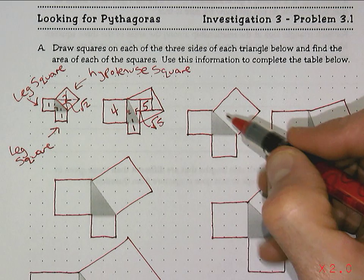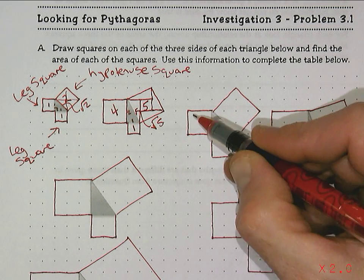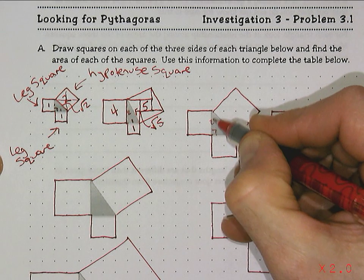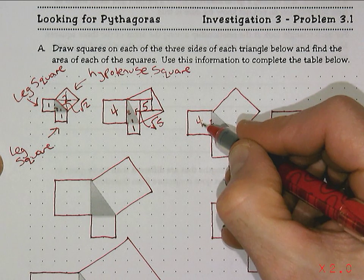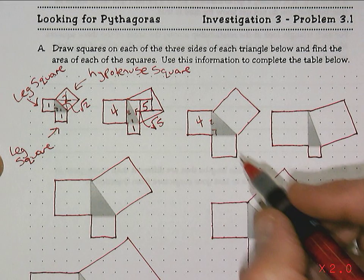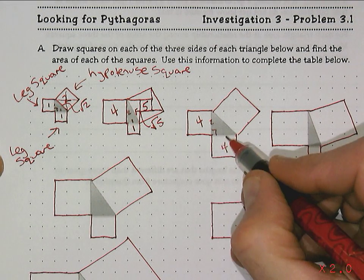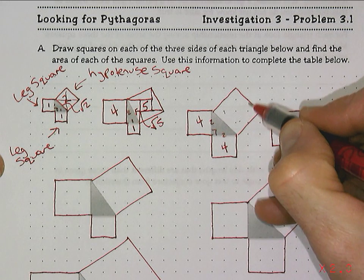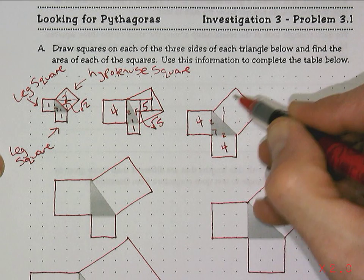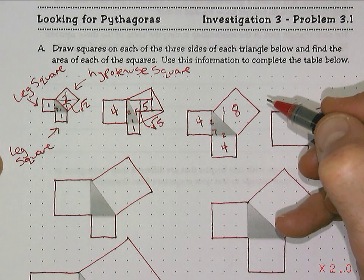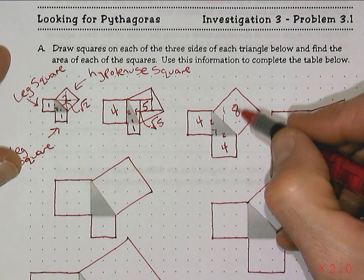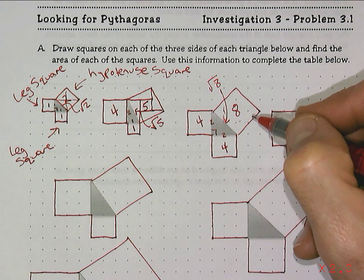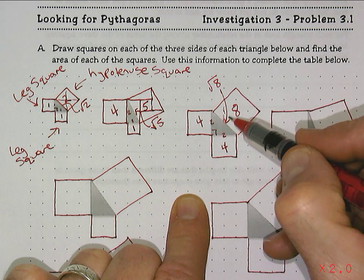The next right triangle has a right angle here, with a leg square, another leg square, and the long side as the hypotenuse squared. This side length is two, and the area is four — two squared is four, or the square root of four is two. This one is actually the same size, with a side length of two and area of four. Cutting the hypotenuse square into pieces, there are four whole squares in the middle and four half-squares on the outside, for a total of eight square units. So this side of the triangle is the square root of eight.